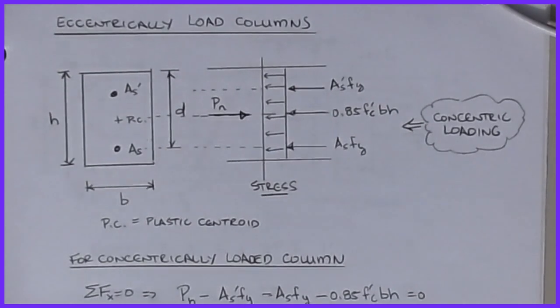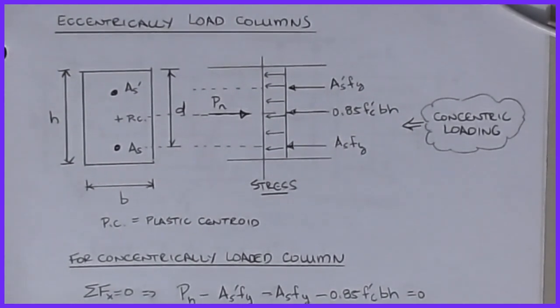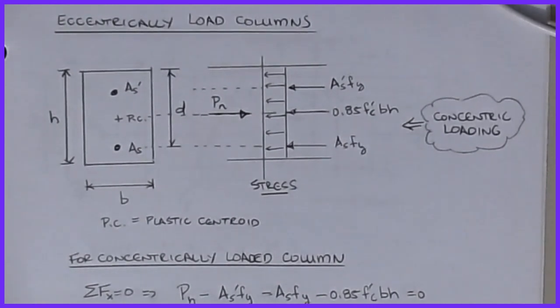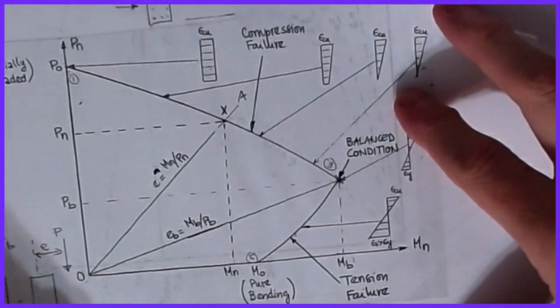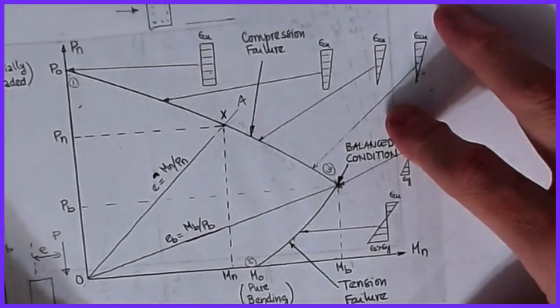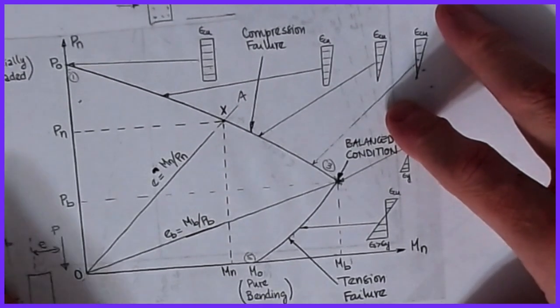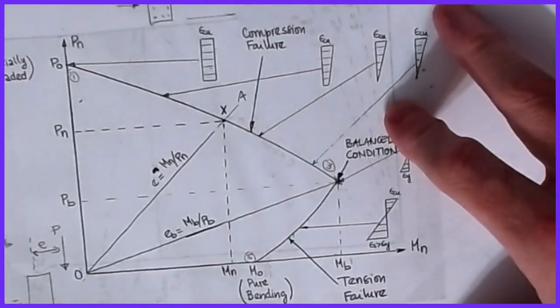Welcome back. In this video we're going to focus on how to compute the equations necessary to generate an interaction diagram. We talked about interaction diagrams in the last video and found five points along that basic curve. We came up with a diagram showing the ultimate capacity of a column subjected to both axial load and moment in varying amounts, and we defined all of our points — this was the pure axial point up here.